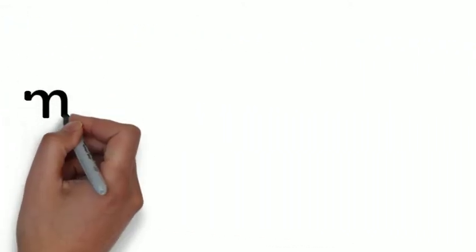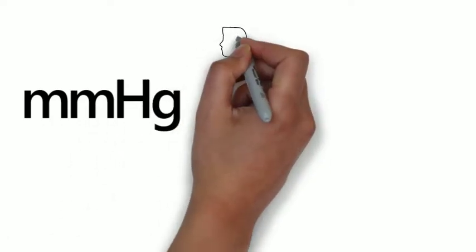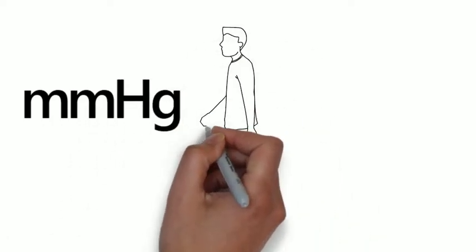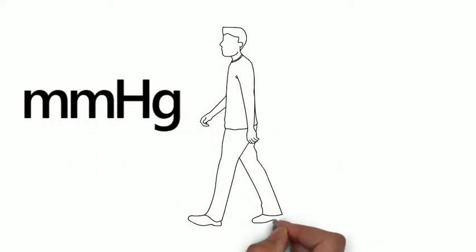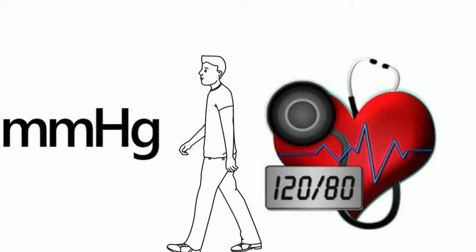Blood pressure is measured in millimetres of mercury. Typically, the ideal blood pressure for the average adult is 120 over 80 millimetres of mercury.